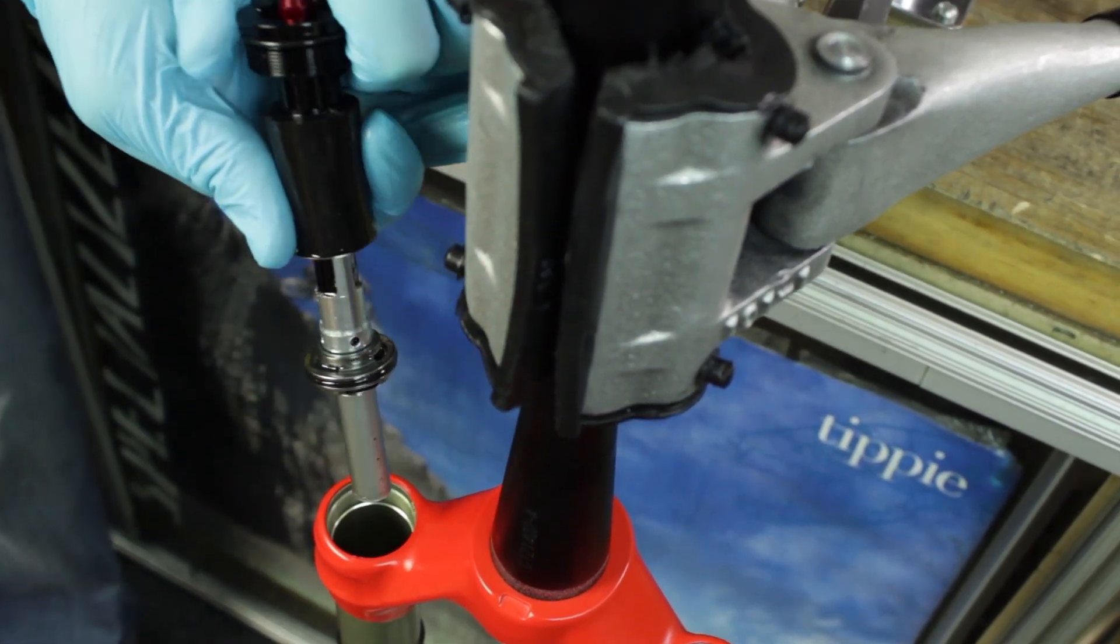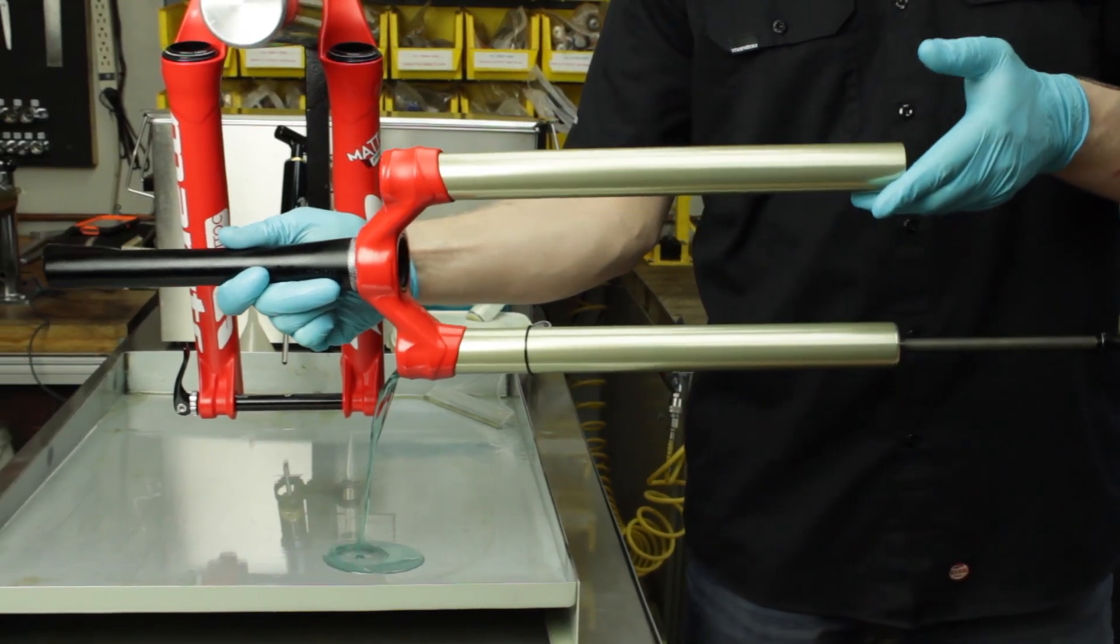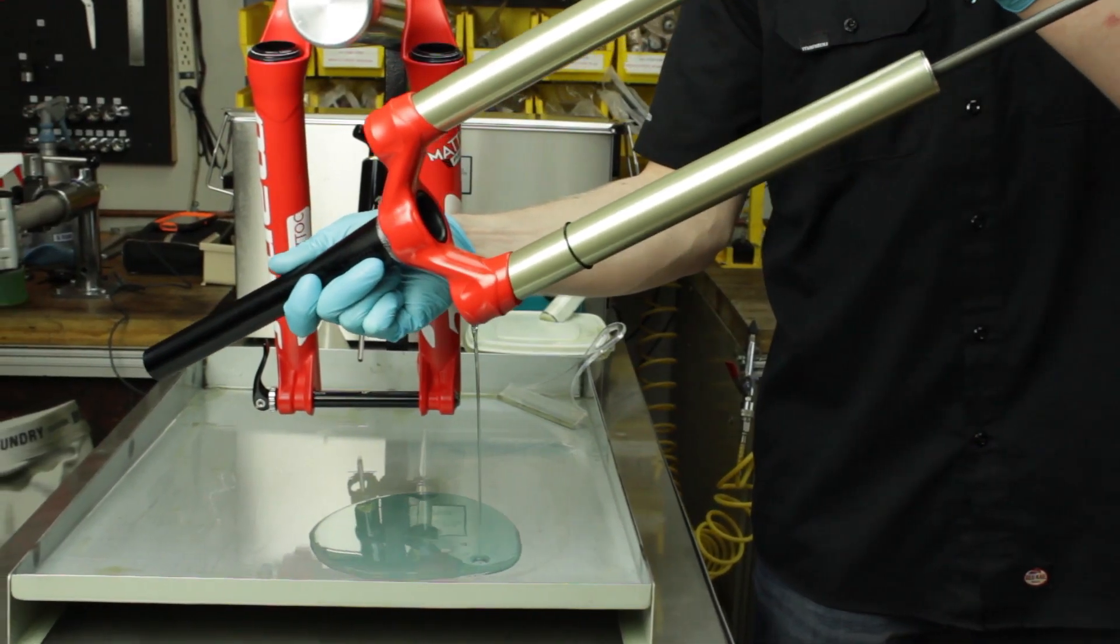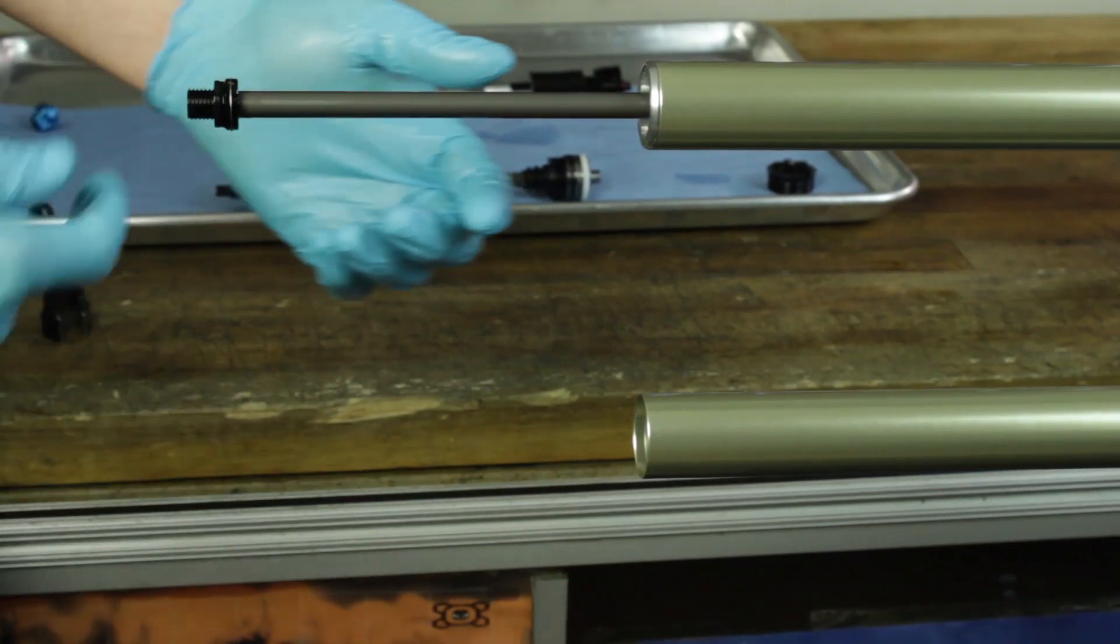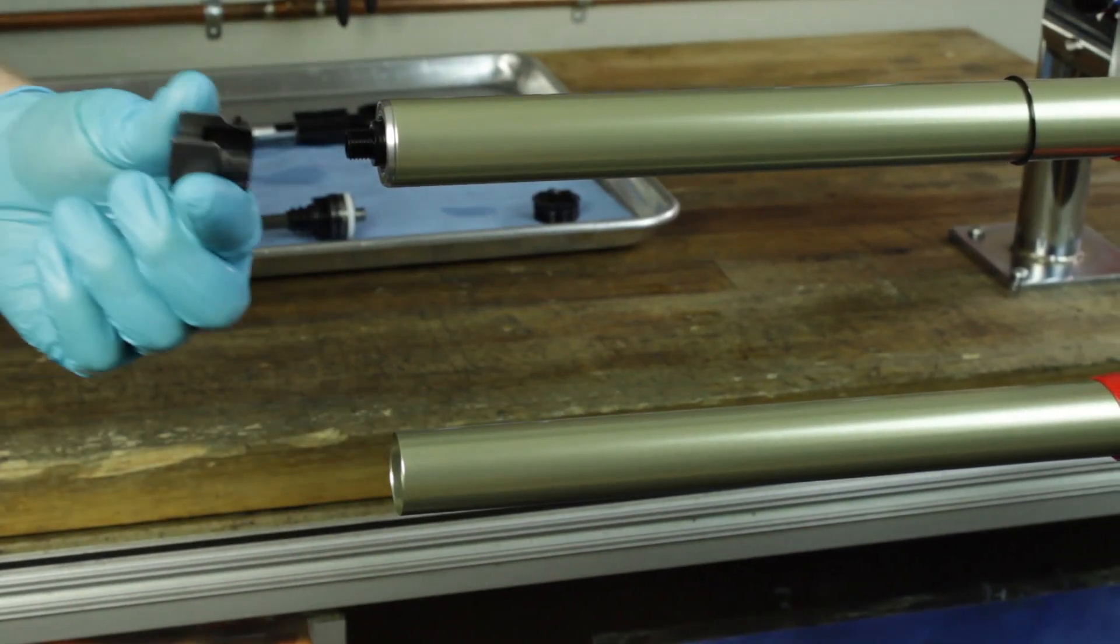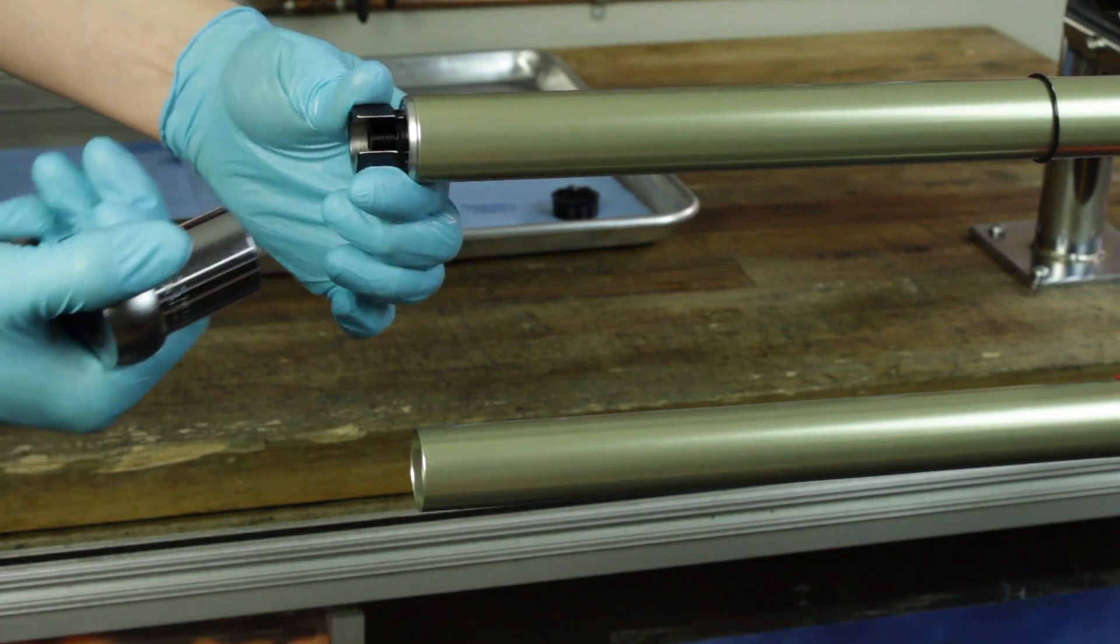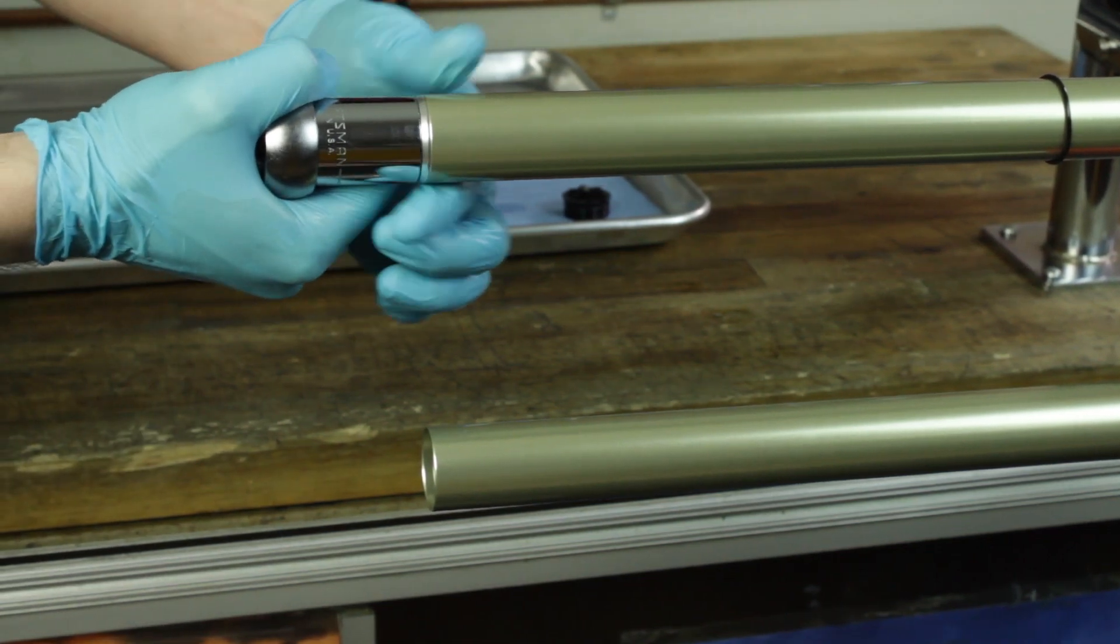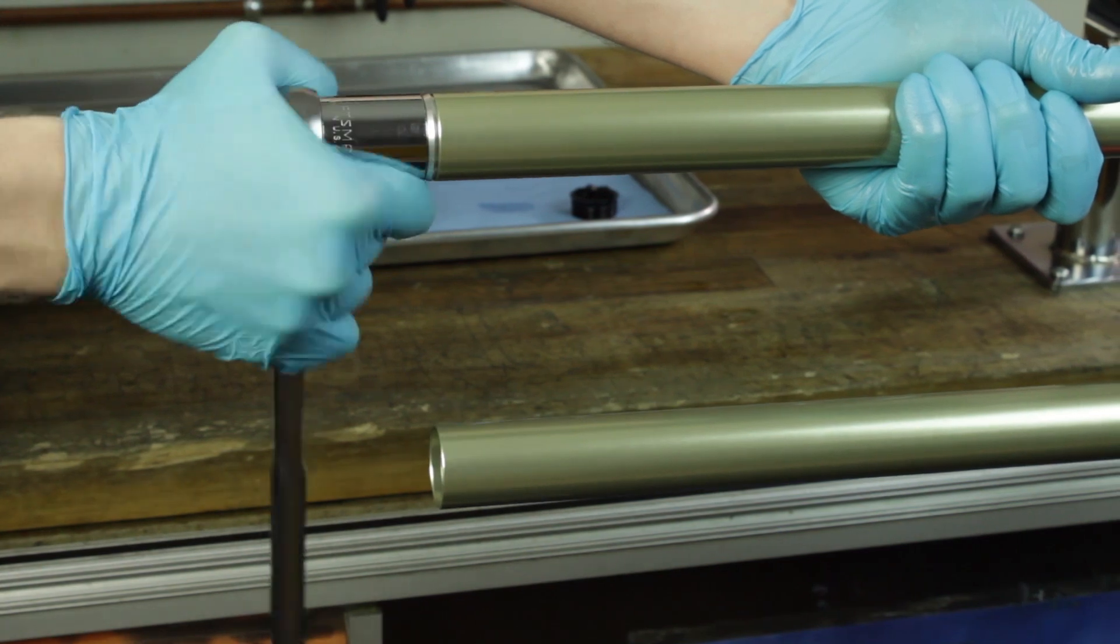With the MC squared assembly extracted, we can now pour the majority of the fork fluid out of the inner leg of the crown steer assembly. Insert the matic cassette tool into the TPC rebound assembly's cap. Loosen the cap and extract the TPC rebound assembly by pulling straight out.